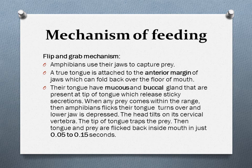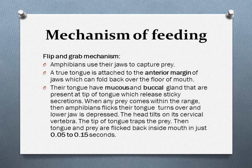Many salamanders are unspecialized in their feeding methods and use their jaws to capture prey. Anurans and plethodontid salamanders use their tongue and jaws in the flip and grab feeding mechanism. In this mechanism, a true tongue is first seen in amphibians — attached at the anterior margin of the jaw and falling back over the floor of the mouth. Mucus and buccal glands on the tip of the tongue release sticky secretions. When prey comes within range, the amphibian flicks out its tongue, the tongue turns over, the lower jaw is depressed, the head tilts on its cervical vertebrae, the tip of the tongue traps the prey, and the tongue and prey are flicked back inside the mouth — all within 0.05 to 0.15 seconds.